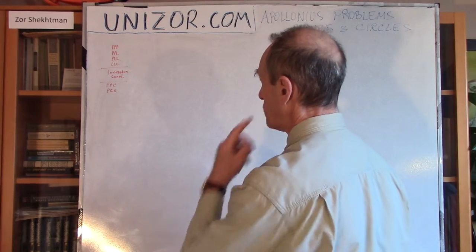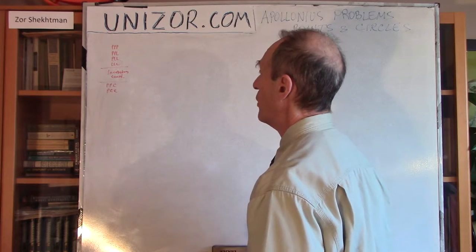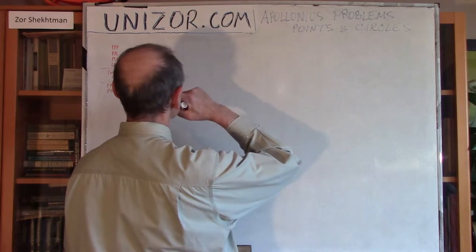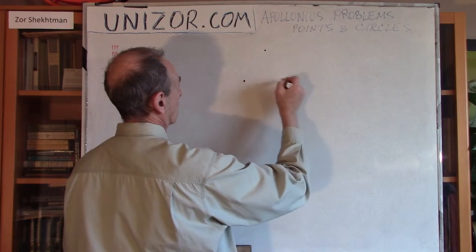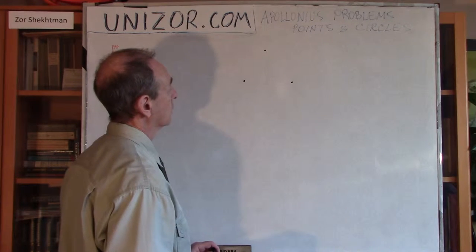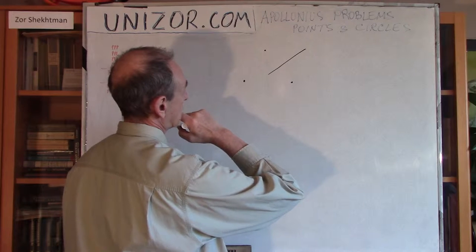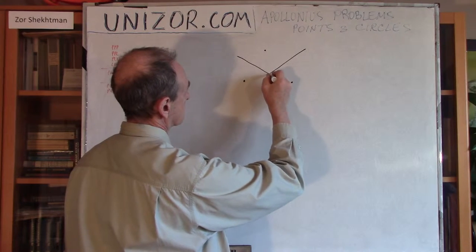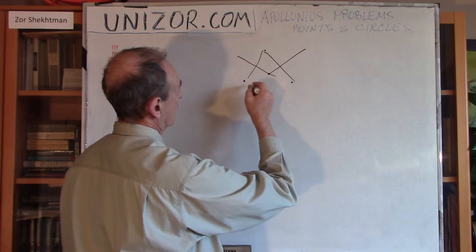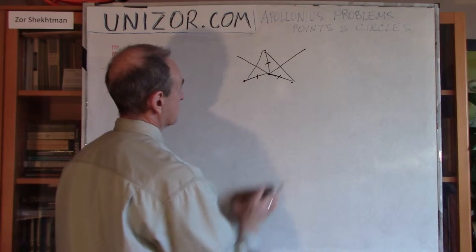The first lecture was about constructing a circle which is either passing through points or tangential to lines. We had four different problems. The first: given three points, the way you draw a circle through all these points is to use segment bisectors — perpendicular to the line connecting each pair of points. That's the three-points case.